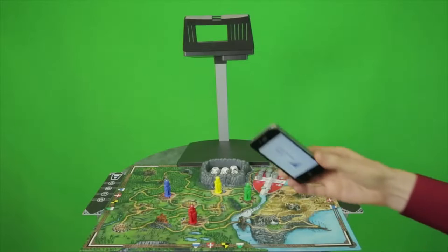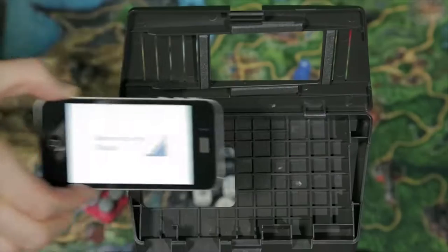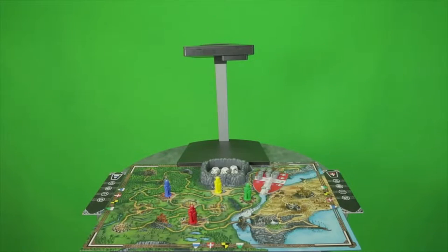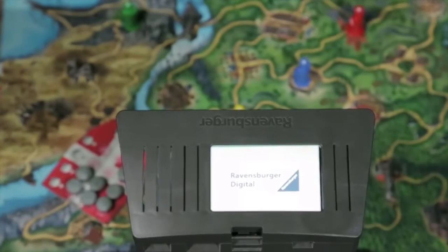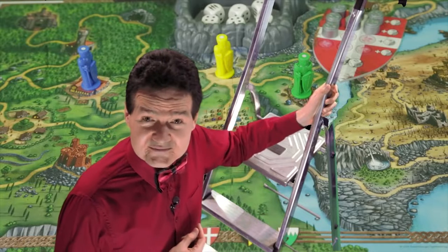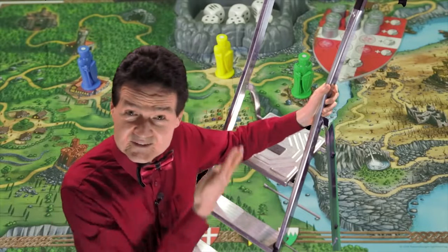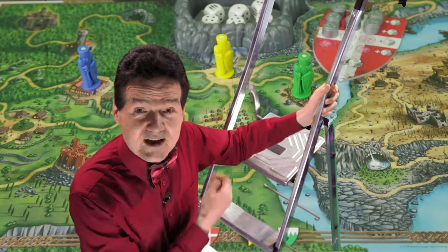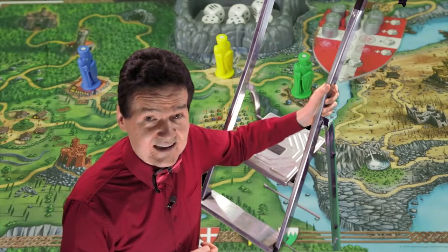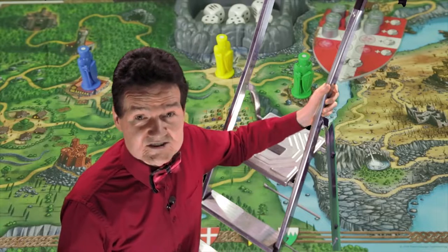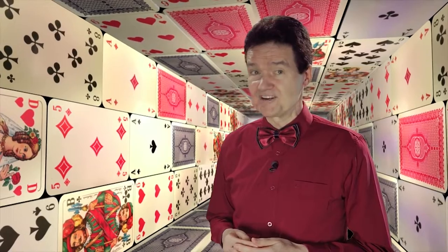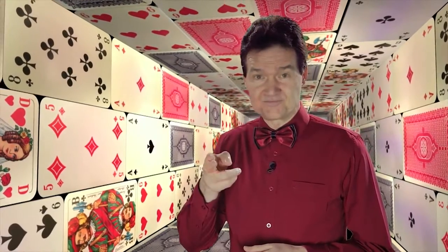Our next game uses the smartphone as an integral part. The smartphone is placed above the board. So, in King Arthur, the smartphone up there sees all, knows all, and controls all, just like in real life. The future is up to you. Enjoy.